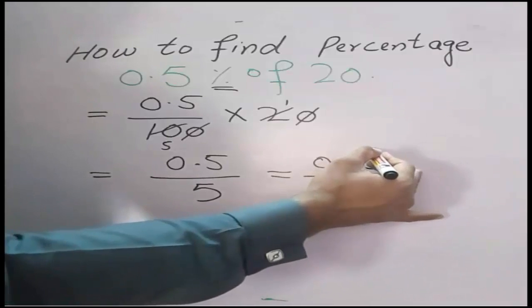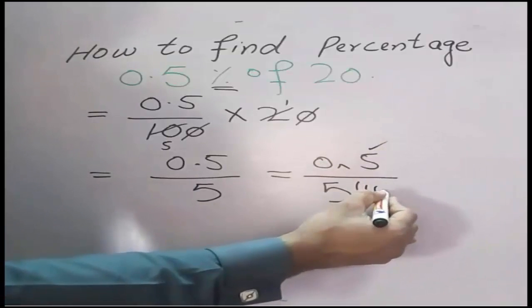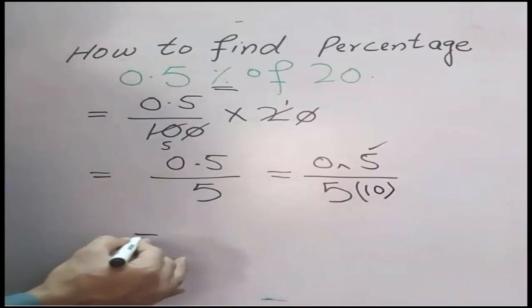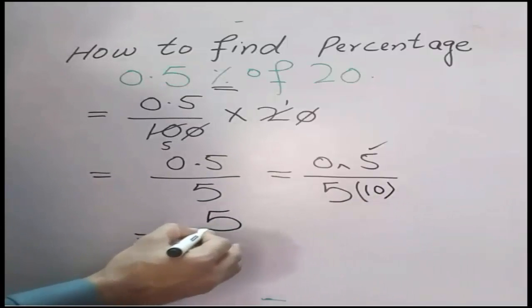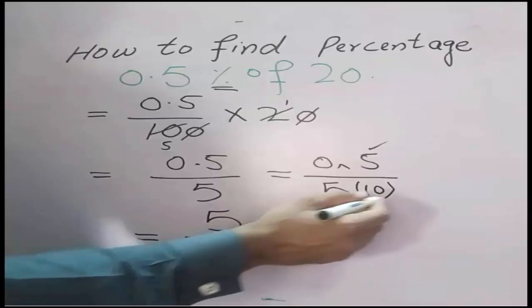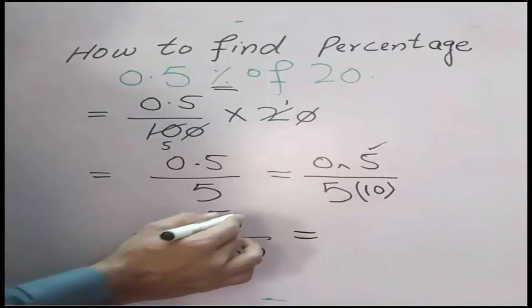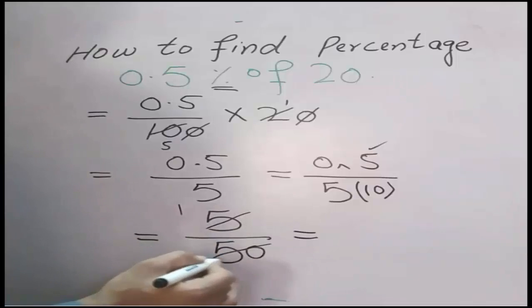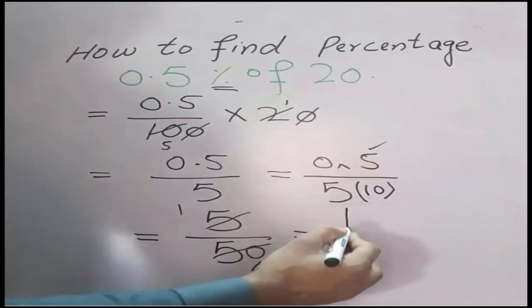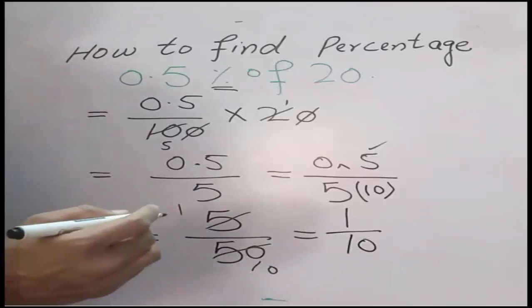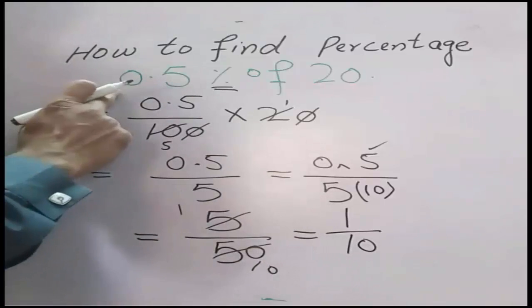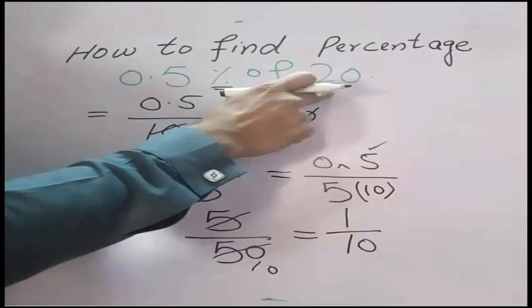After that, 5 over 5 times 10. It would be 5 times 1 is 5, 5 times 10 is 50. 1 over 10 is the percentage of 0.5 of 20.